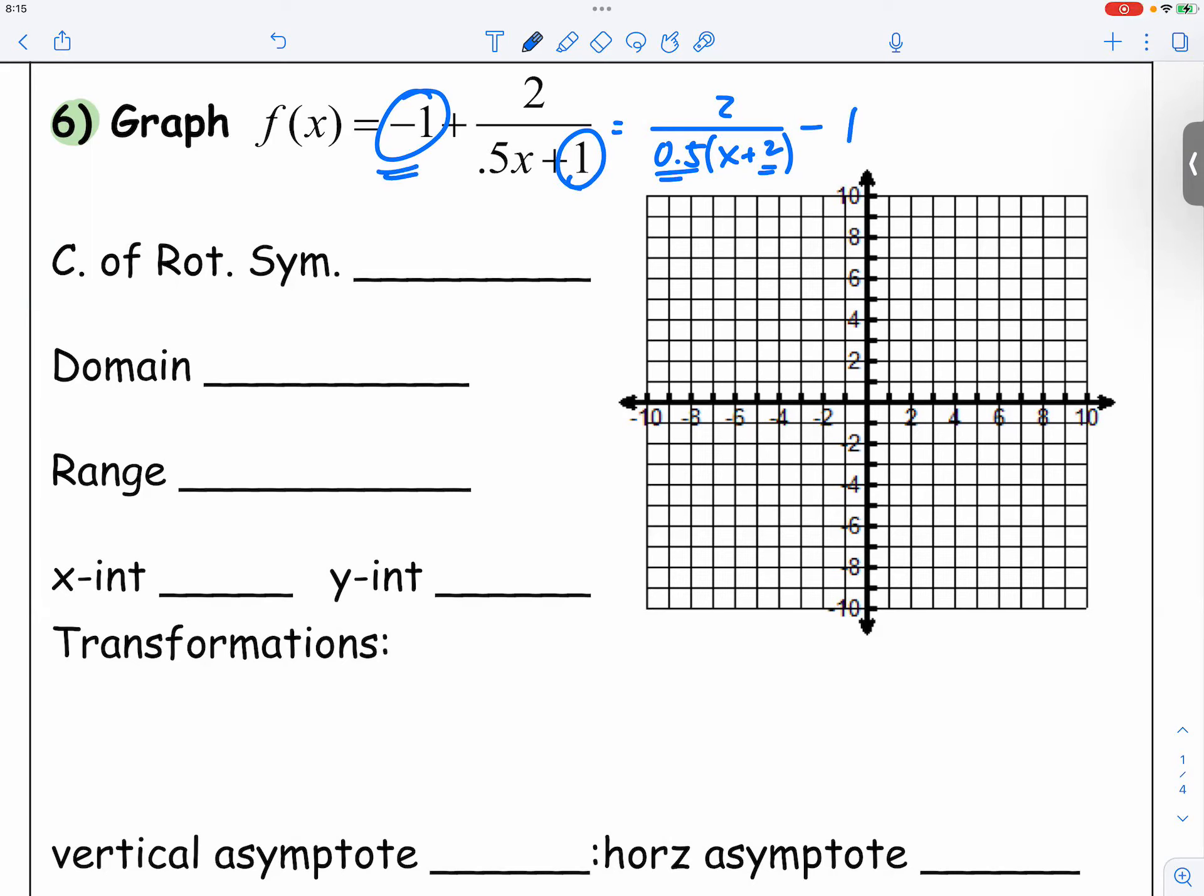Okay? So we have 1, 2, 3, 4, 4 numbers. What would the transformations be? Down 1 at the end, yes. Left 2, definitely.